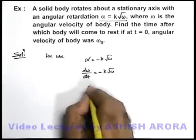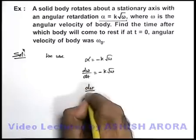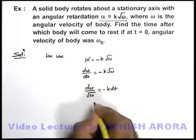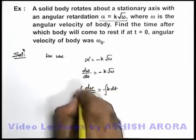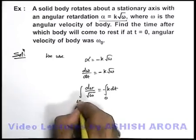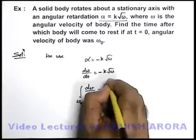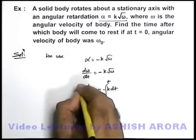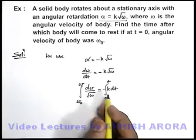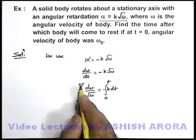Further we can rearrange the variables. We'll get dω/root ω equals minus k dt. If we integrate this expression, it is given that at t equals zero the initial angular speed was ω₀, and at a general time t the angular velocity is ω. Actually we are required to find the time after which it'll come to rest, so we can also put zero over here.